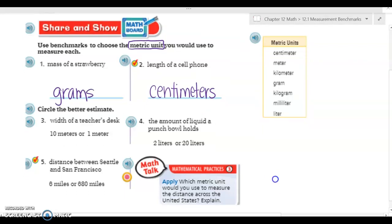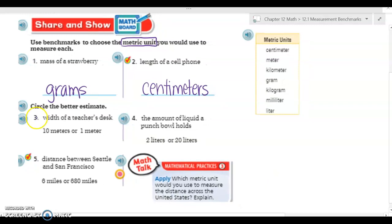Okay, all righty, I'd like you to go ahead and try number three, four, and five on your own. You're circling the best estimate, so you're choosing which of the two. Go ahead and press play once you think you found the answers. Okay, welcome back. So I'm going to have you check your work for three, four, and five.